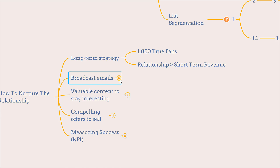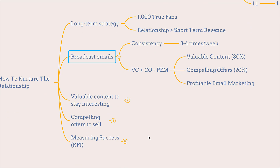Building a long-term relationship is so much more important than building short-term revenue — that is the one thing to always keep in mind. You can also broadcast emails, and consistency is key. Send emails at least three to four times a week with no pitch, basically focusing on value. There is a formula: VC + CO = PM. VC stands for Valuable Contents, CO stands for Compelling Offer.